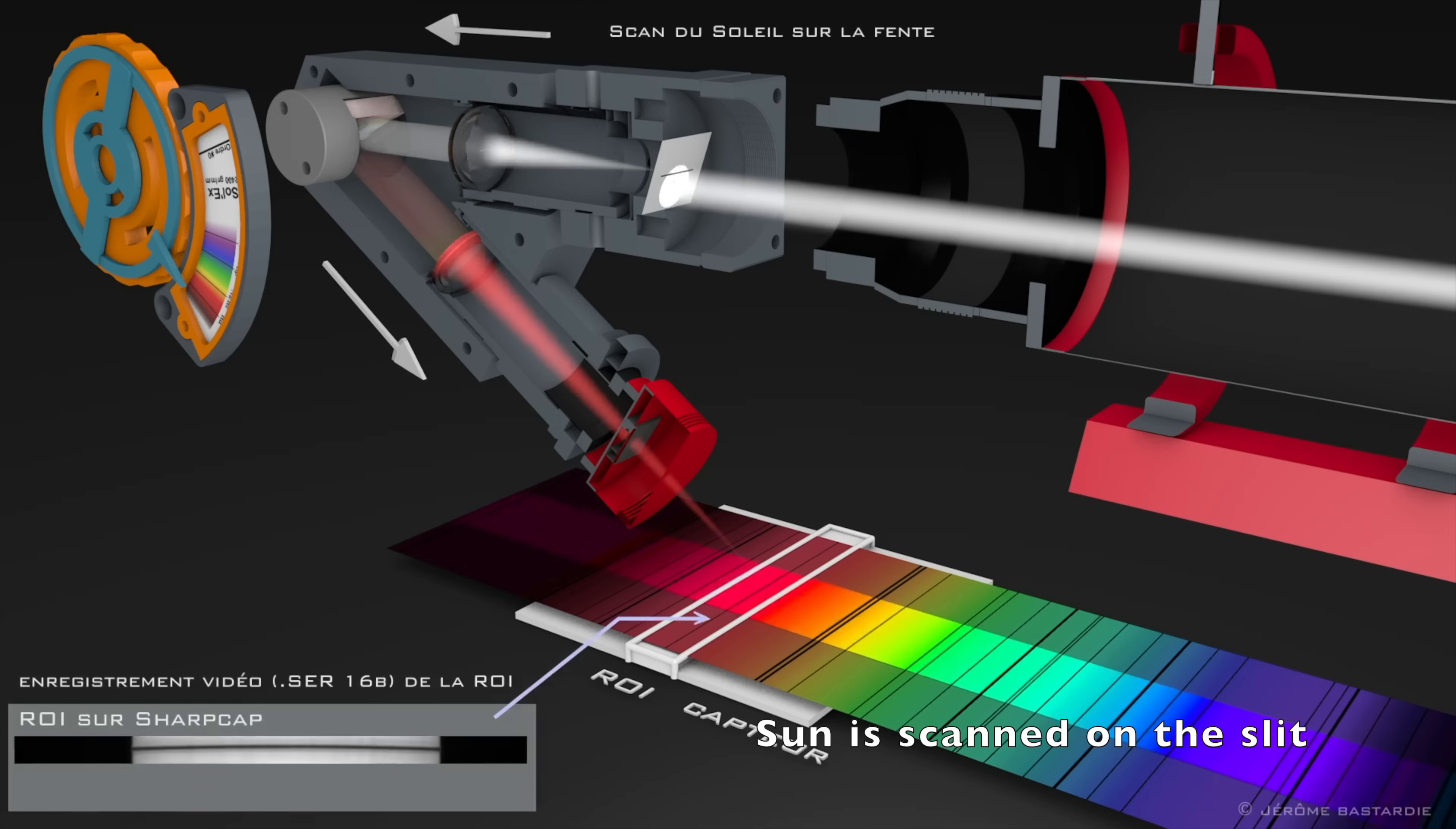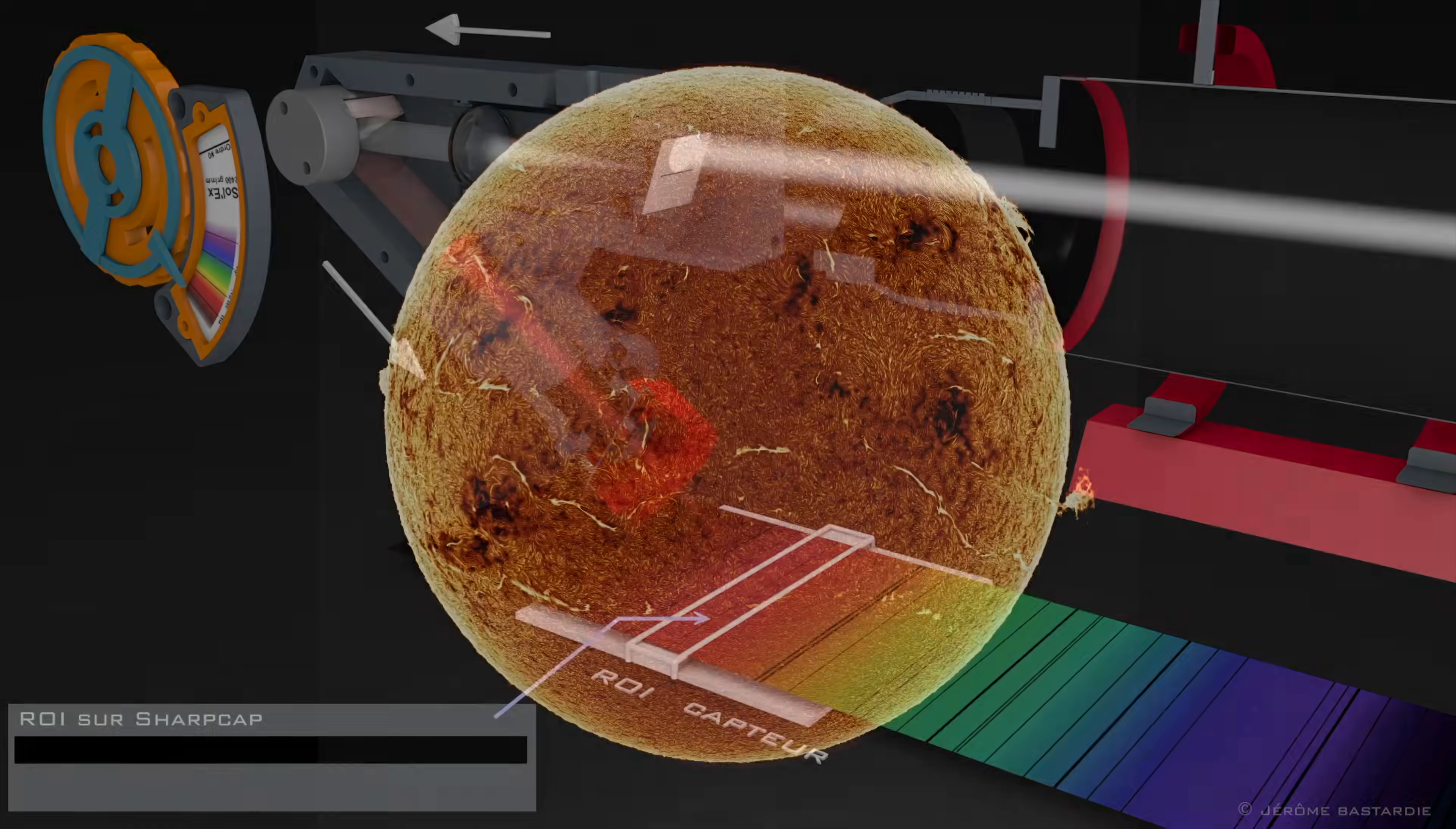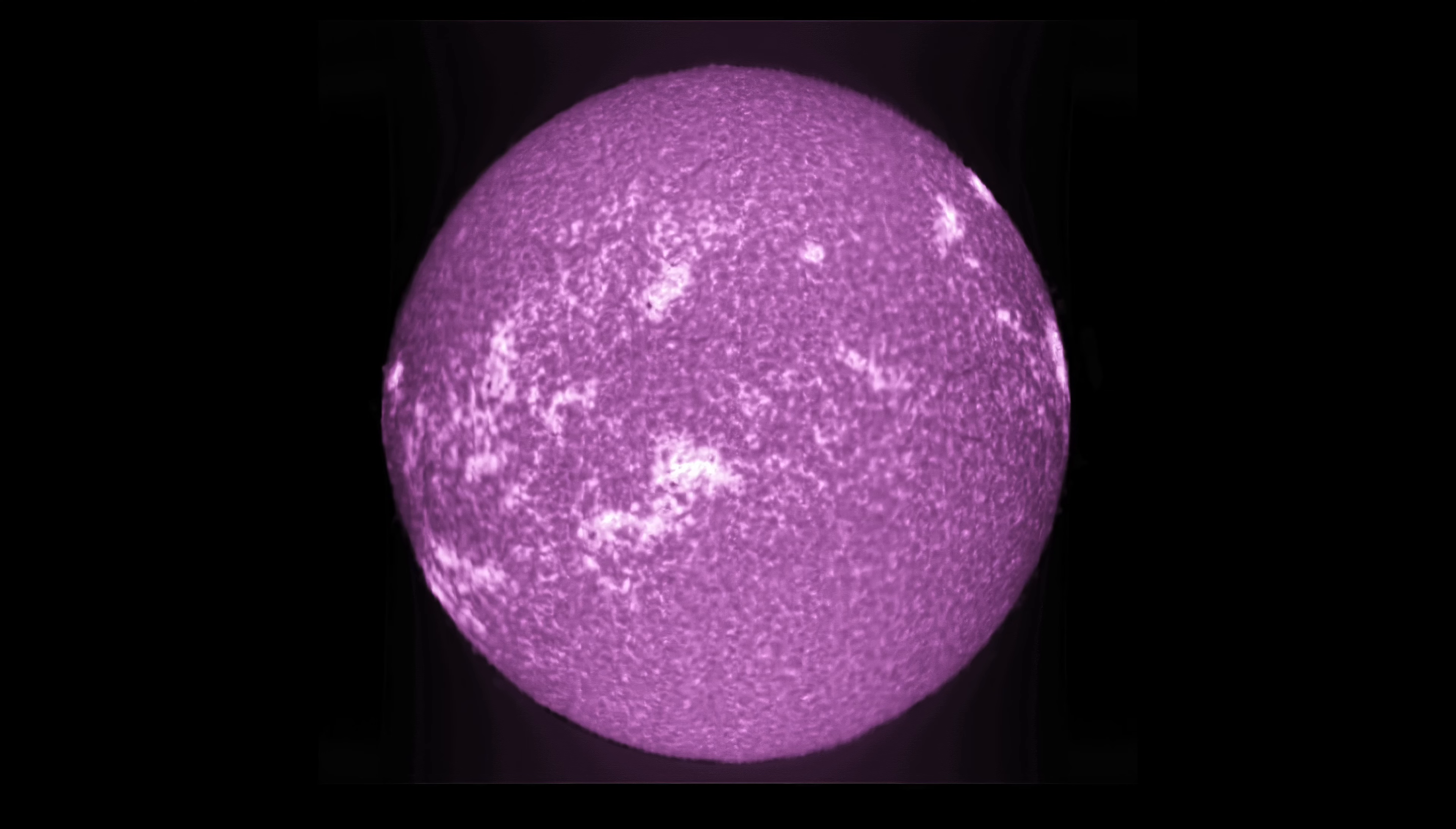Why? Different solar features, for example the chromosphere or magnetic fields, emit or absorb light at different wavelengths. For example, the hydrogen alpha line, 656.28 nm reveals the chromosphere, while the calcium K line, 393.4 nm highlights magnetic activity.